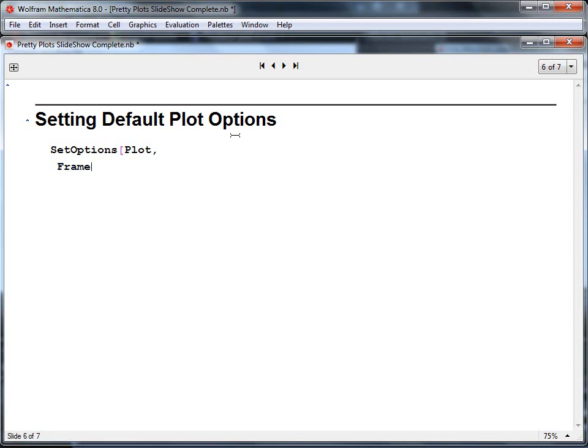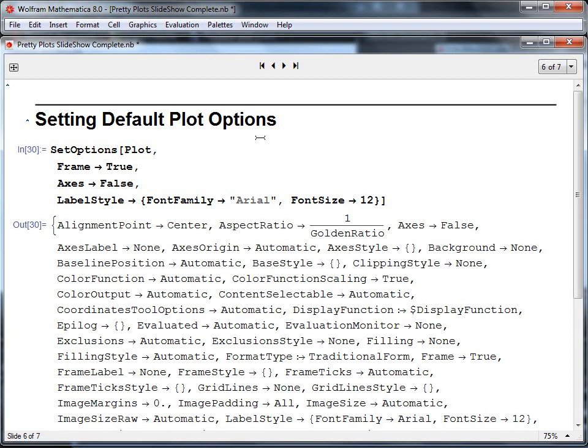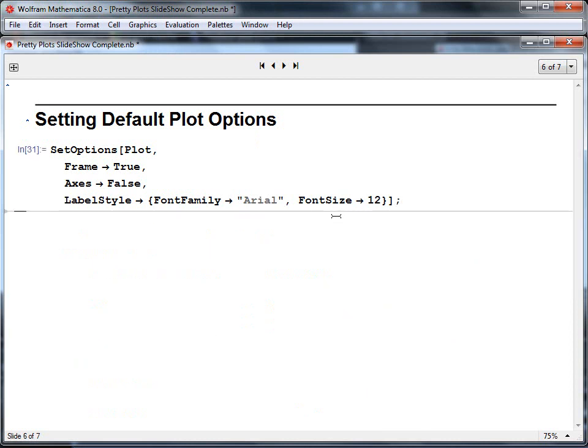I'd like to say that the frame should always be true, so it should always be a plot with a frame. I always want to turn the axes off, so axes should be false. And I'll change the label style to have the font family of Arial as before. And I'm going to change the default font size to 12 point. And so that's actually the full set of options. If we put the semicolon, it suppresses those, it just doesn't display them.